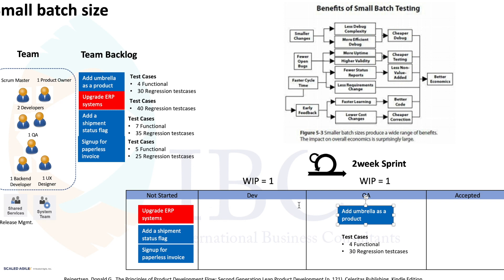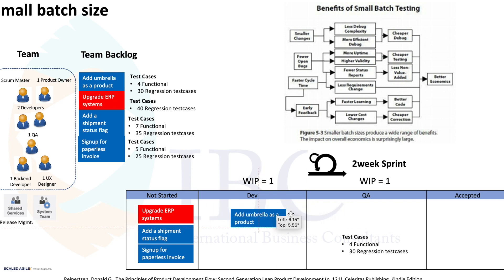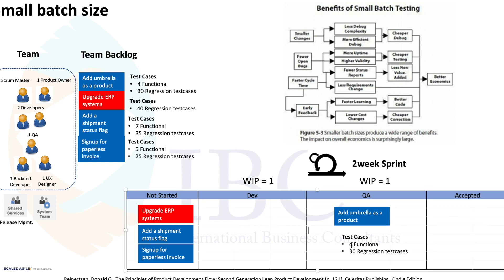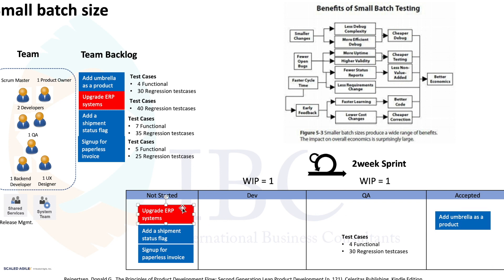For example, if the WIP limit is one, the whole team will swarm on one user story and it will flow through the system seamlessly and fast. But the pain point is: imagine you are that one test engineer. You have to do 40 regression test cases every time. When one story goes through and you pick up the next, you have to redo those 40 regression test cases — which is a nightmare. Nobody would want to be in that scenario.